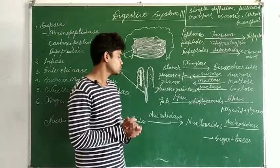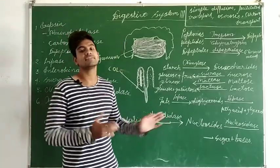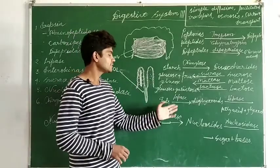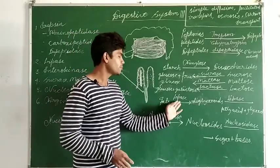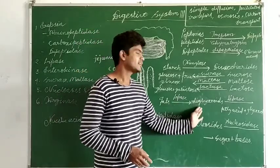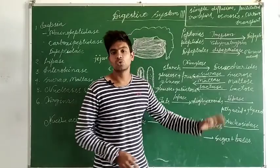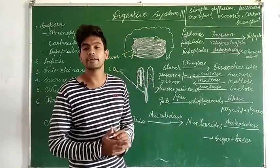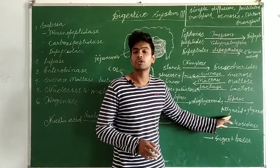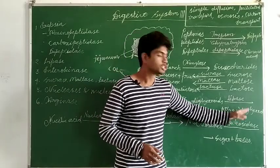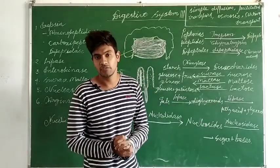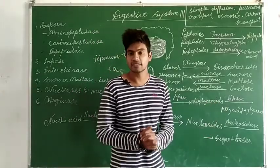For fats: fats are acted upon by lipase and converted into diglycerides. Those diglycerides are again acted upon by lipase and ultimately converted into fatty acids and glycerol, which are the end products of fat digestion and are absorbed by the small intestine.